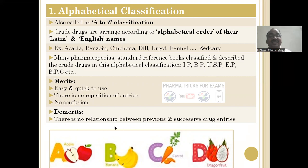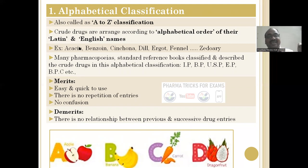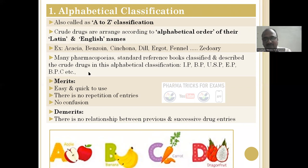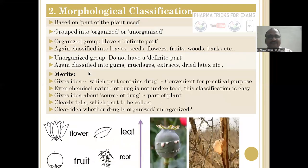The merits of alphabetical classification: it is very easy and quick to use, and there is no repetition of entries. Whereas in other classifications, repetition is a problem. The demerit is that there is no relationship between a previous and successive drug entry — for example, two drugs starting with A may be completely different in nature.